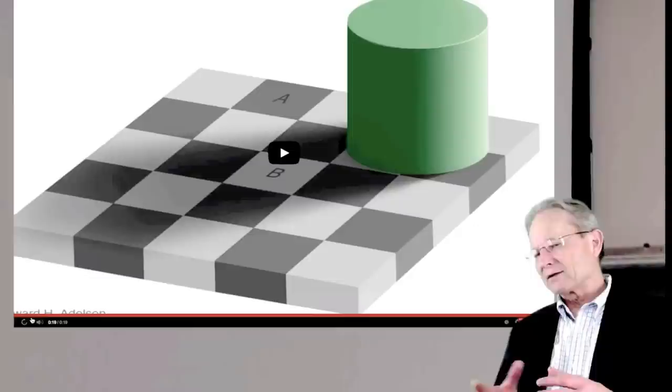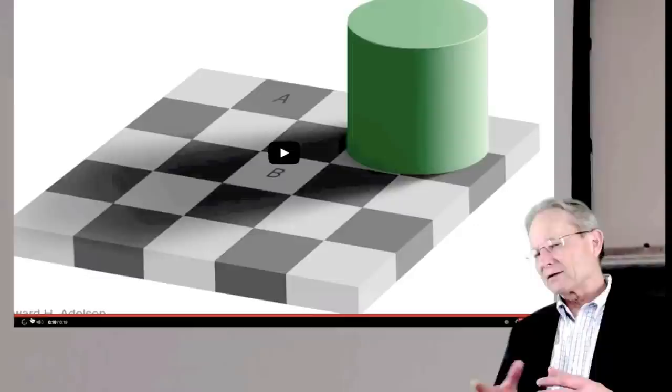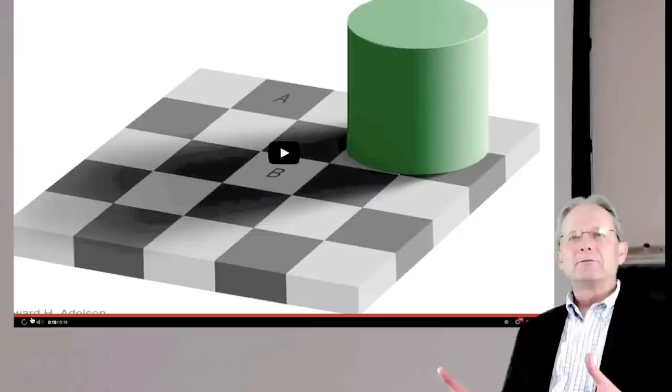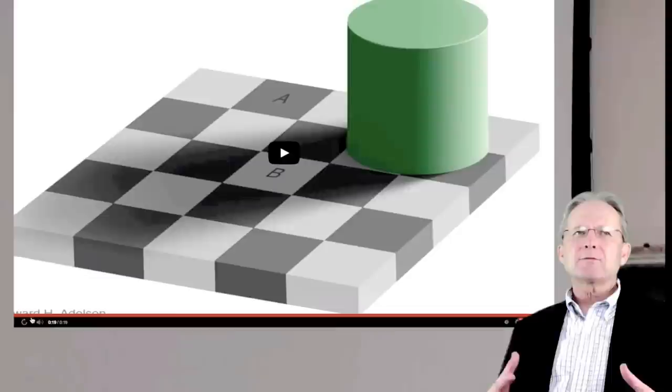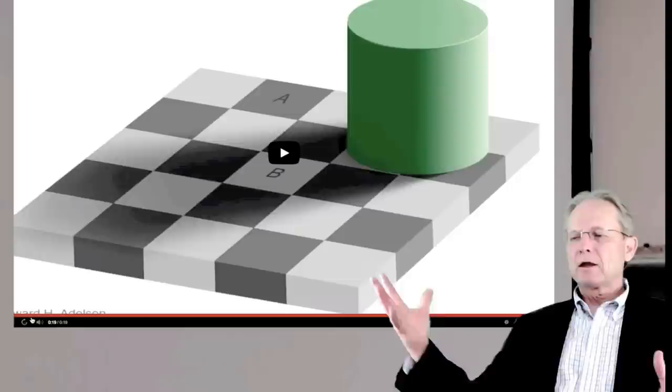Moreover, even though we can see that square B is darker than the other light squares in the overall pattern, we know that that could be, or we believe that could be because of the shadow that's cast by the cylinder that's sitting on the edge of the board where light is presumably coming from the right side.